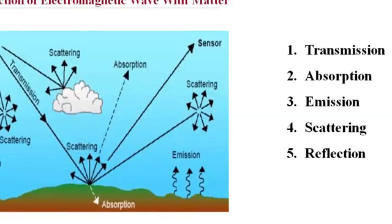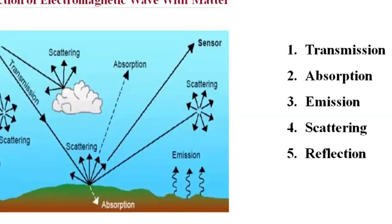The velocity of electromagnetic radiation changes in the matter depending upon the density of the medium. This change in velocity is measured in terms of the index of refraction.